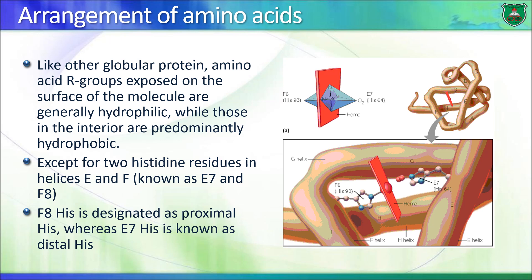Just like any other globular protein, myoglobin has mainly polar and charged amino acids on its surface, and hydrophobic amino acids in the center of the molecule. However, there are two exceptions: two histidine residues that are hydrophilic but exist in the core. These are known as the proximal histidine, located in the F alpha helix, and the distal histidine, located in the E alpha helix.